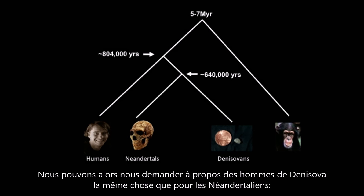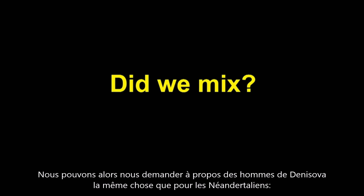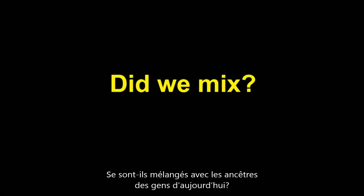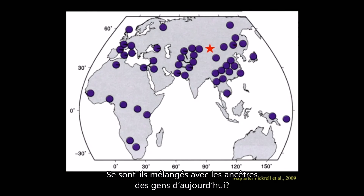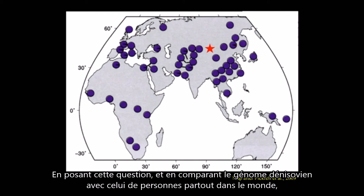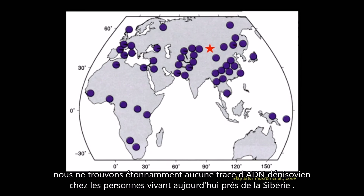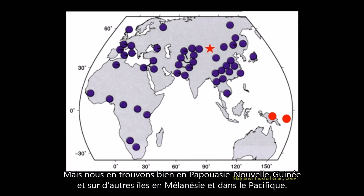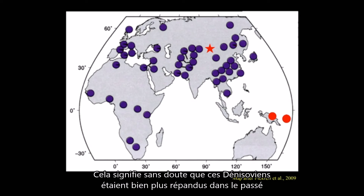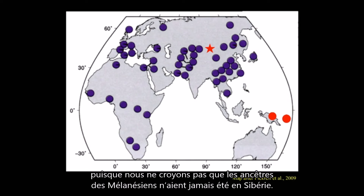This individual comes from a population that shares an origin with Neanderthals but far back, and then has a long independent history. We call this group of humans, described for the first time from this tiny piece of bone, the Denisovans, after the place where they were first described. We can ask for Denisovans the same question as for Neanderthals: did they mix with ancestors of any present-day people? Surprisingly, we find no evidence of Denisovan DNA in any people living even close to Siberia today, but we do find it in Papua New Guinea and other islands in Melanesia and the Pacific.